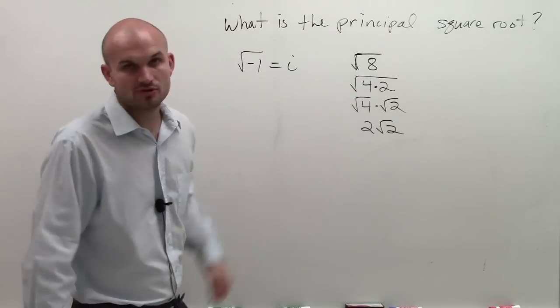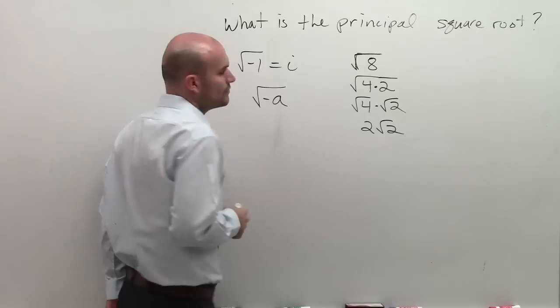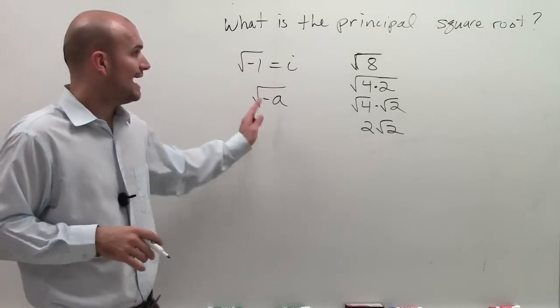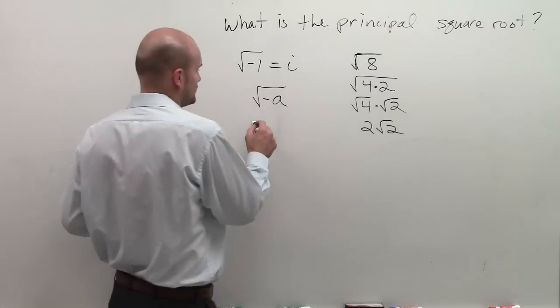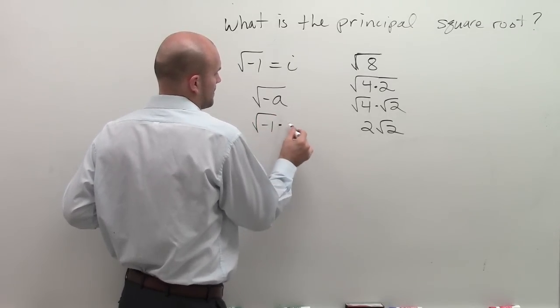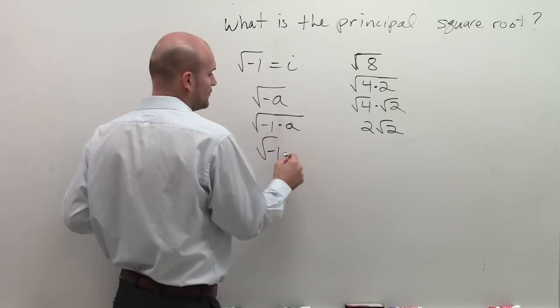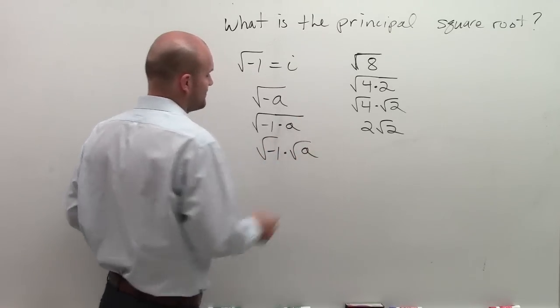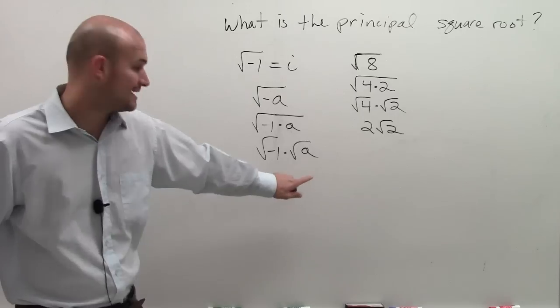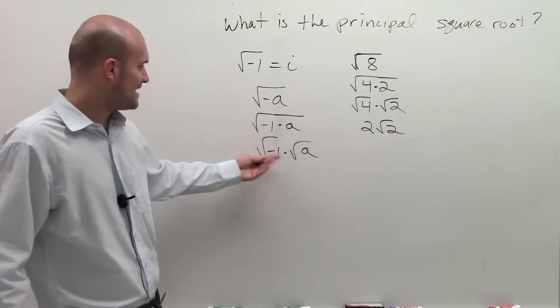So what is the principal square root? What the principal square root tells us, if I have the square root of a negative number, I can break that down into the square root of negative 1 times a. Then I can break it down further into square root of negative 1 times the square root of a. Where there, now I can actually evaluate the square root of the positive value, right?